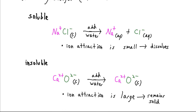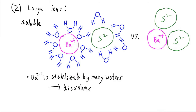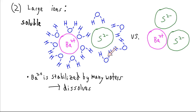The other thing that might affect solubility is the size of the ions. If we have very large ions, we can fit a large number of water molecules around them — many partial negative charges from the oxygens or many partial positive charges from the hydrogens. So barium sulfide is going to be soluble: the Ba²⁺ and the S²⁻ each get surrounded by water molecules, and that arrangement is more favorable than remaining as a solid compound.